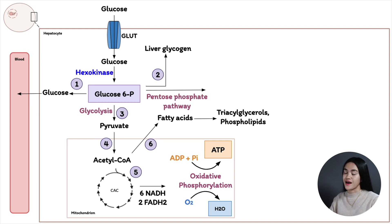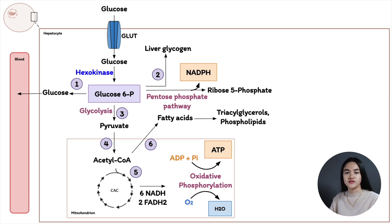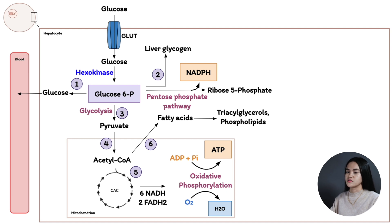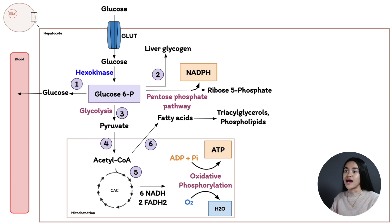Another pathway for glucose-6-phosphate is the pentose phosphate pathway, producing NADPH, which is a crucial electron donor in fatty acid synthesis. The product ribose-5-phosphate is a precursor for nucleotide synthesis. These are the different pathways glucose-6-phosphate can take depending on the organism's metabolic requirements. The enzymes involved are tightly regulated allosterically and hormonally. That is carbohydrate metabolism.